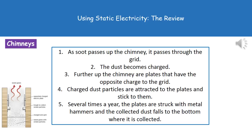Because those plates have the opposite charge to the dust and soot particles, the particles are attracted to those metal plates. They stick together on the plates, and several times a year the plates are struck with metal hammers so that all the accumulated dust falls off and collects at the bottom, where it can be removed without ending up in our atmosphere.